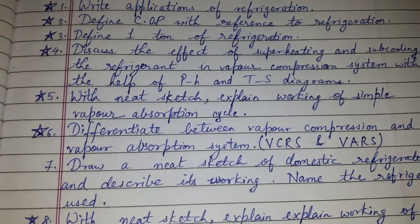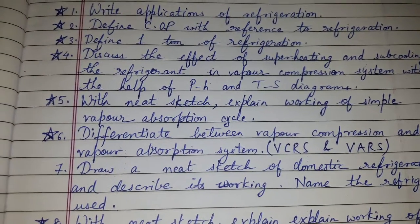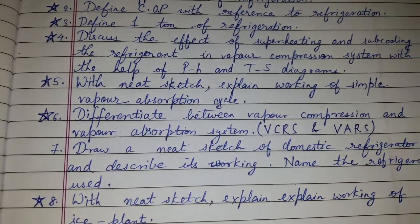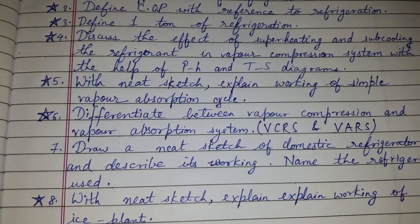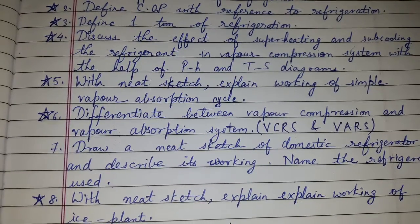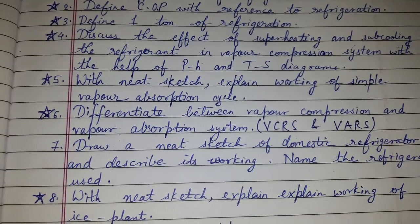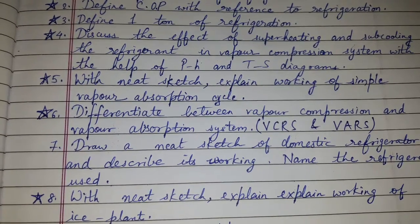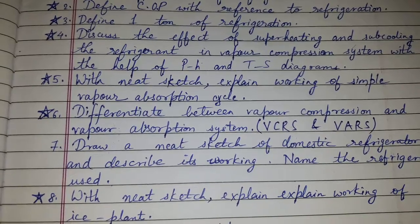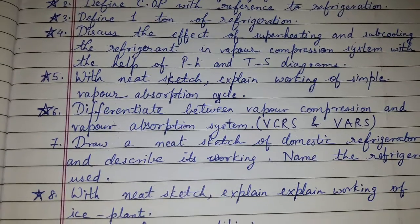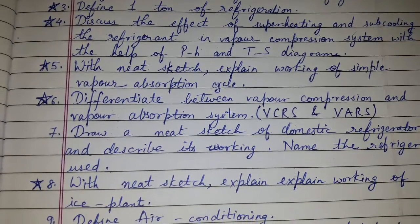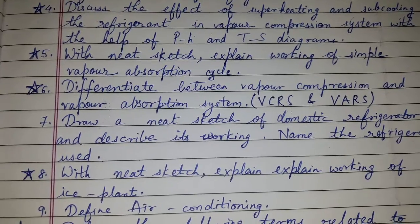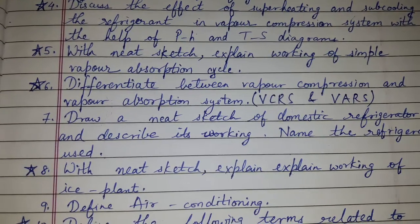Next, define 1 ton of refrigeration. Then, discuss the effect of superheating and supercooling on the refrigerant in a vapor compression system, with the help of pH and TS diagrams.